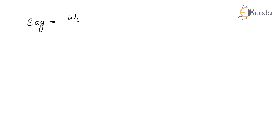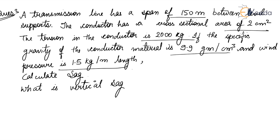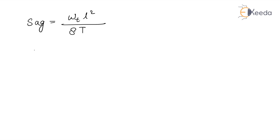We know SAG is equal to the effective total weight multiplied by L² divided by 8T. The span length L is 150 meters and the tension T is 2000 kg.